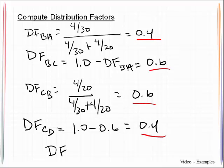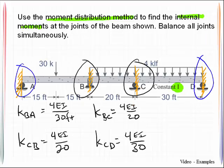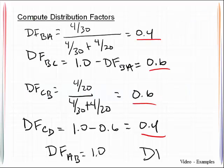There's nothing else there to take part of that load. So distribution factor AB is 1.0 and in a like fashion joint D had a similar situation. So distribution factor of DC is also 1.0.